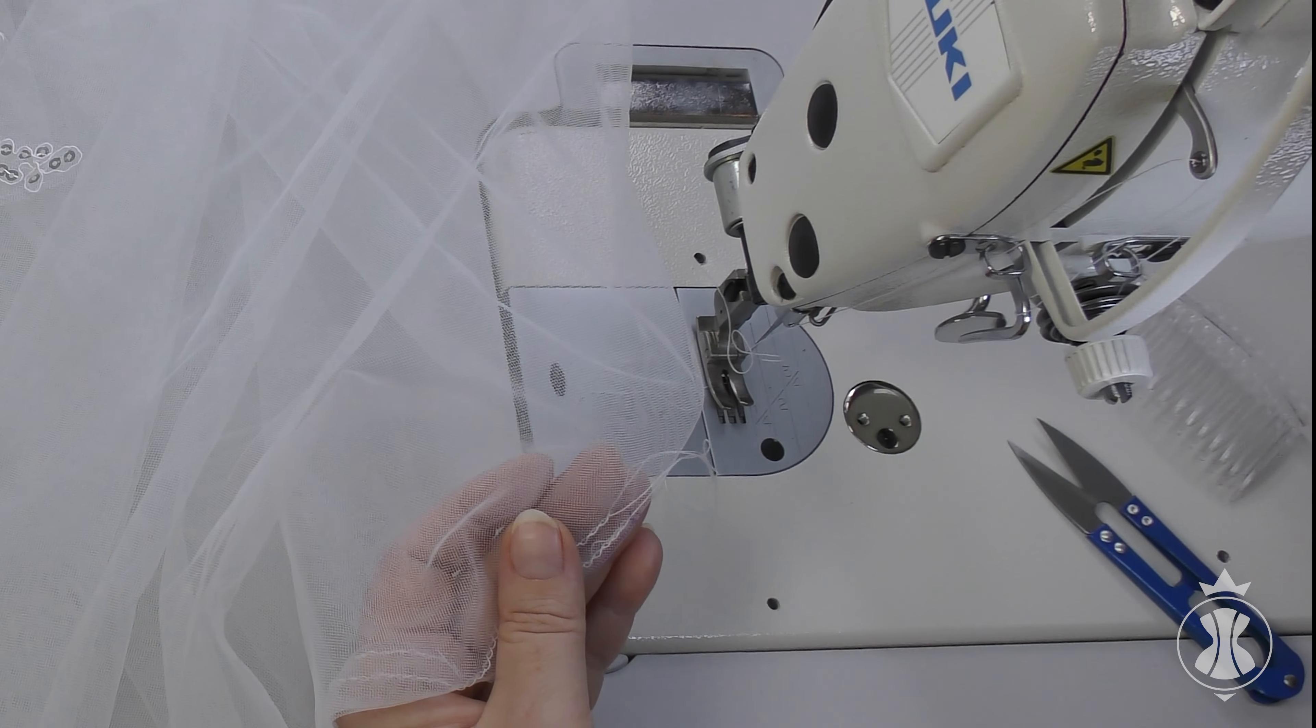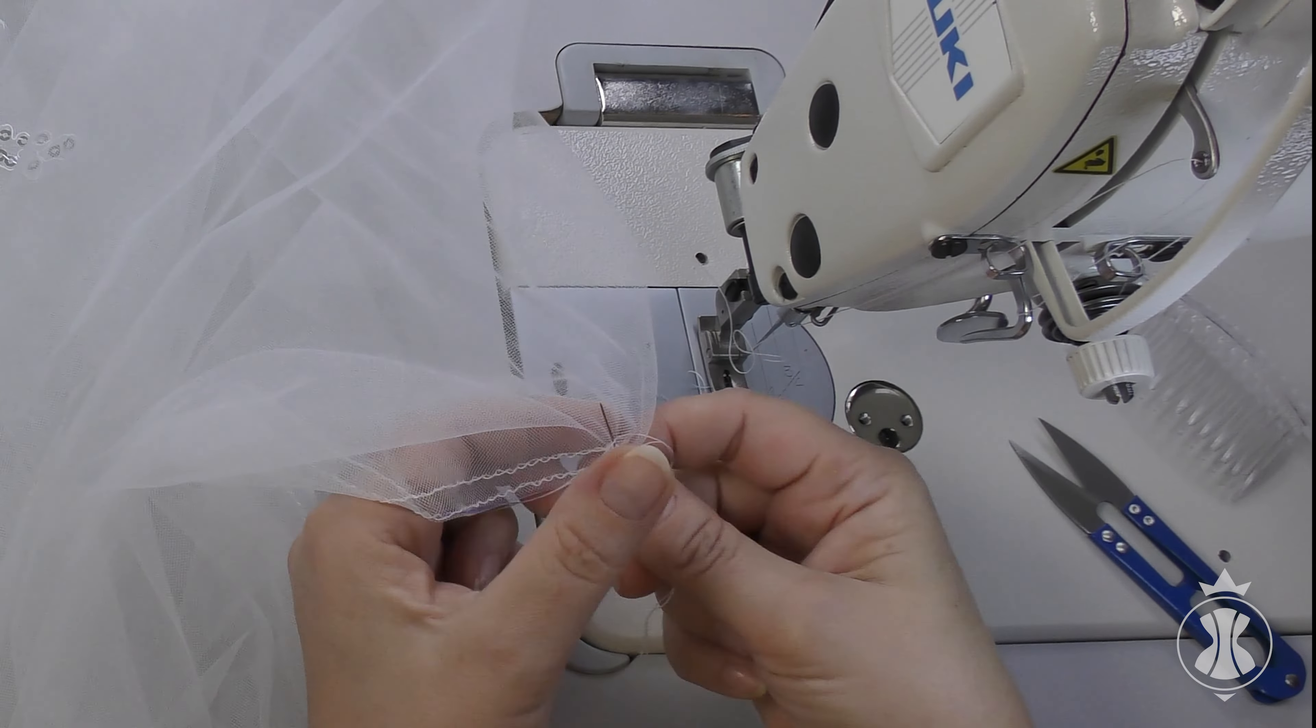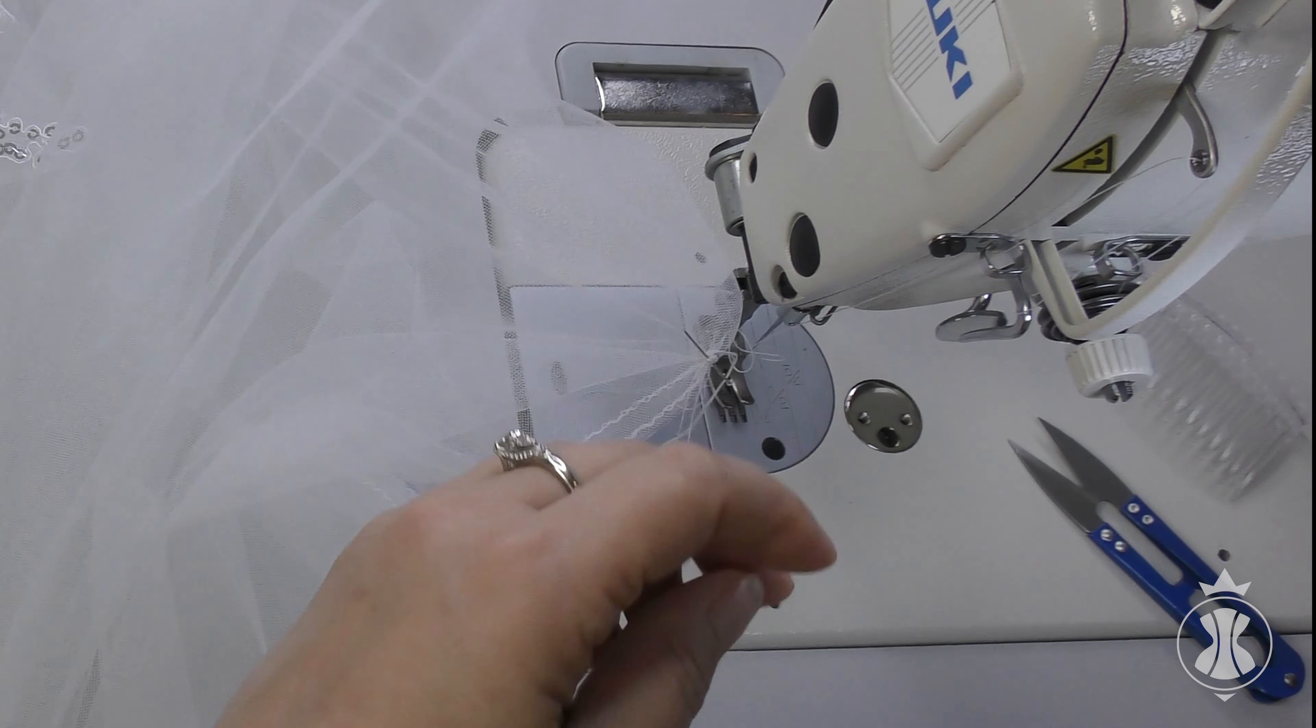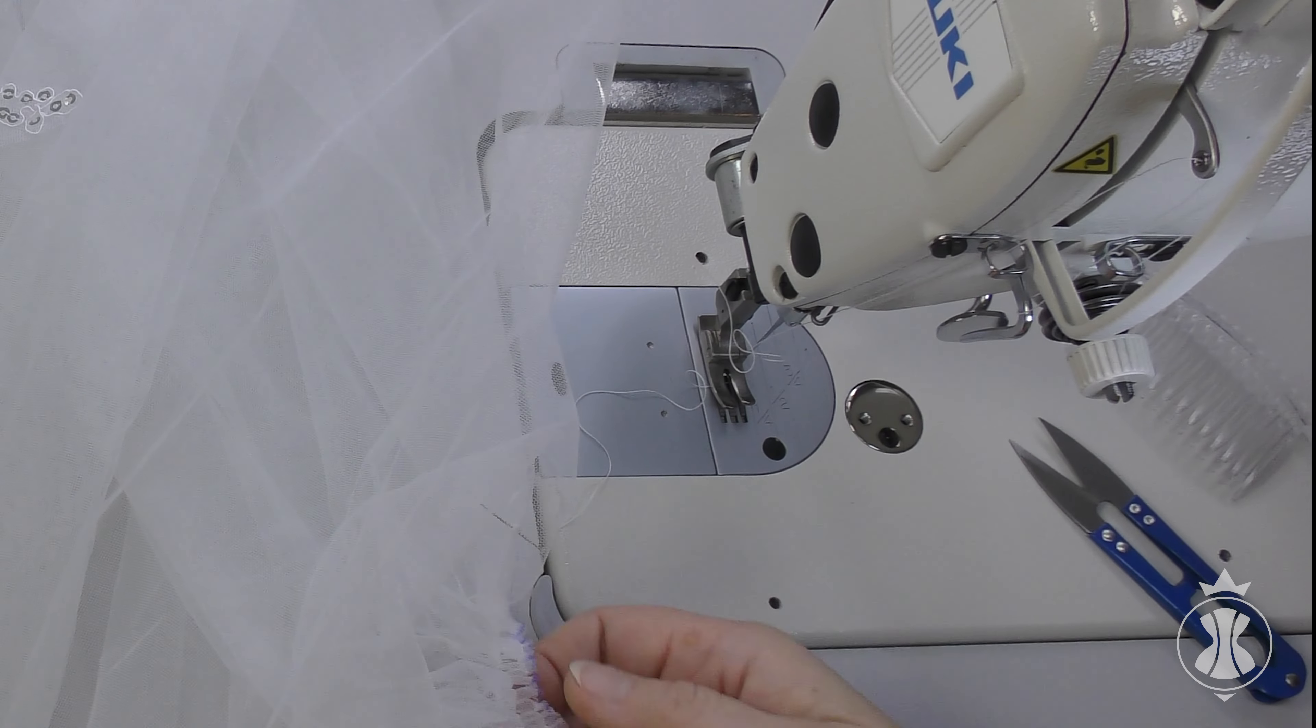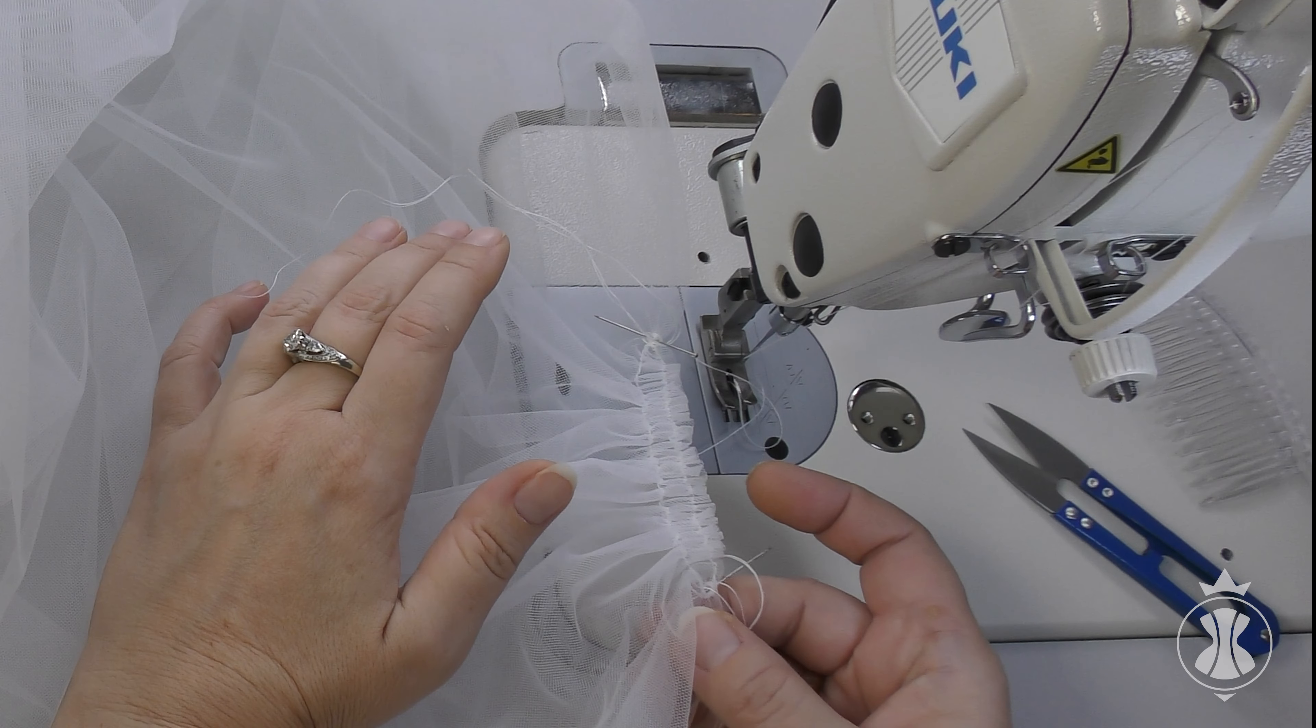Now, gather the fabric to the size of the attachment for the veil. For example, to the comb's width. Secure the thread ends on one side of the stitches, making a few loops around the pinned pin at the marked starting point of the assembly line. Simultaneously pulling both threads from the other ends of the stitches, arrange the gathering and secure the thread ends on the second side to fix it.